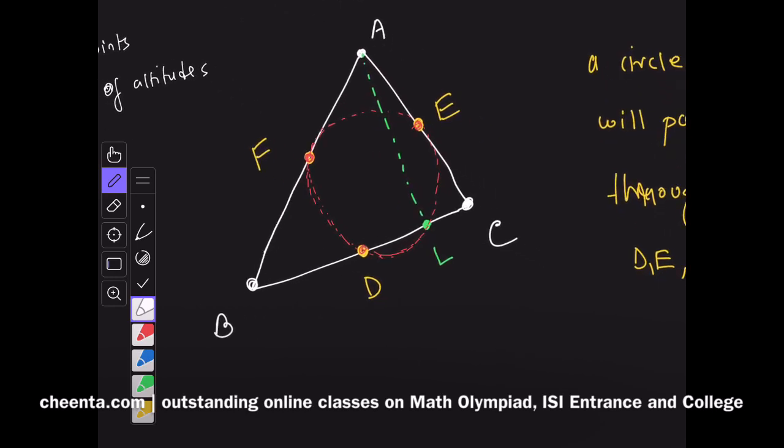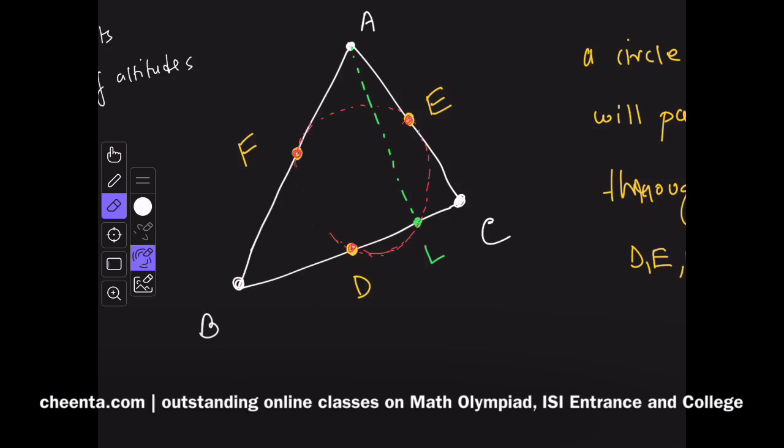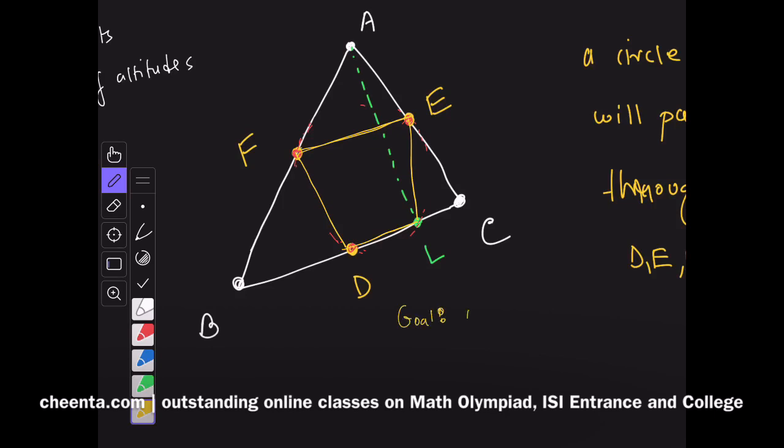For this video I want to show that D, F, E, and L are concyclic. How can I do this? As a first step, I will ask you to show that there are some parallelograms in the picture. First let me draw the quadrilateral DFEL. Our goal is to show DFEL is cyclic.